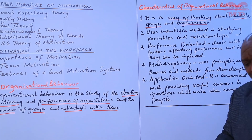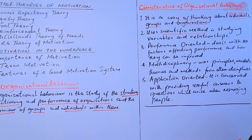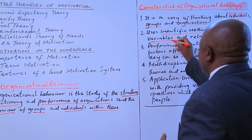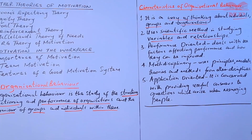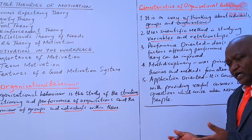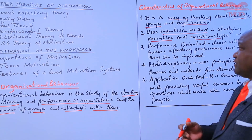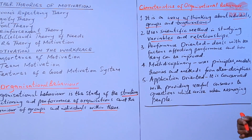Organizational behavior also utilizes the scientific method of studying variables and indicators within a given setting, examining how those variables relate to each other. For example, you may want to find out how training influences employee performance, how that relationship comes into being, and what should be done to ensure that training is applicable and relevant to a given setting.